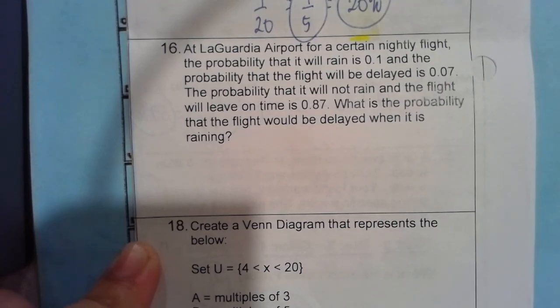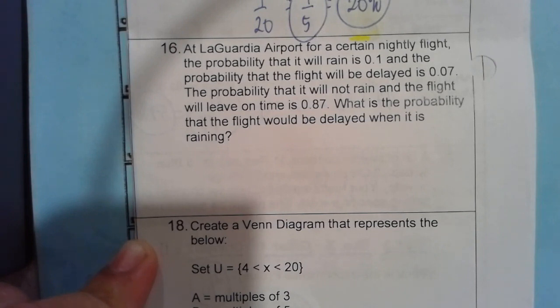16. At LaGuardia Airport for a certain nightly flight, the probability that it will rain is 0.1 and the probability that the flight will be delayed is 0.07. The probability that it will not rain and the flight will leave on time is 0.87. What is the probability that the flight would be delayed when it is raining?